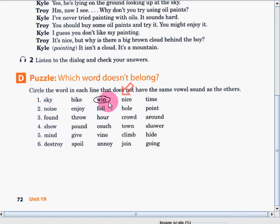The words are noise, enjoy, foil, hole, point. Very good. Hole does not belong to the group. The rest of the four words has OI sound.